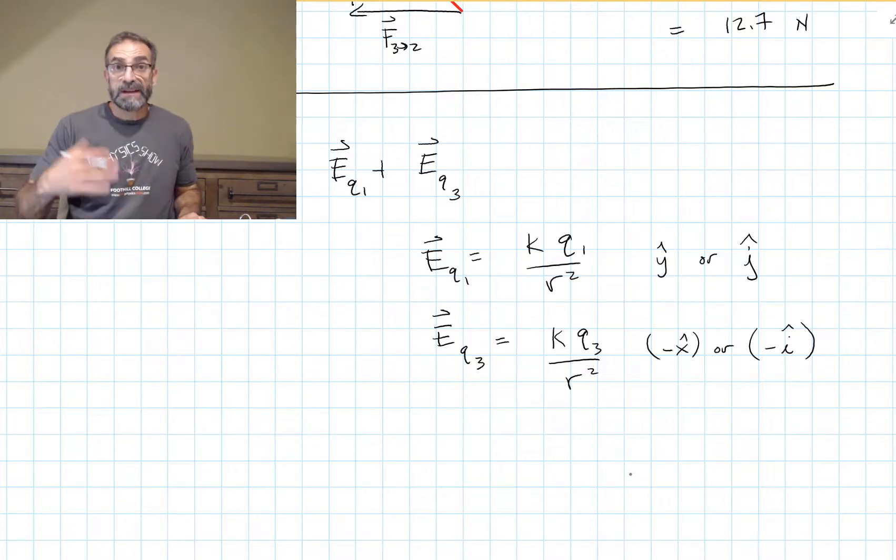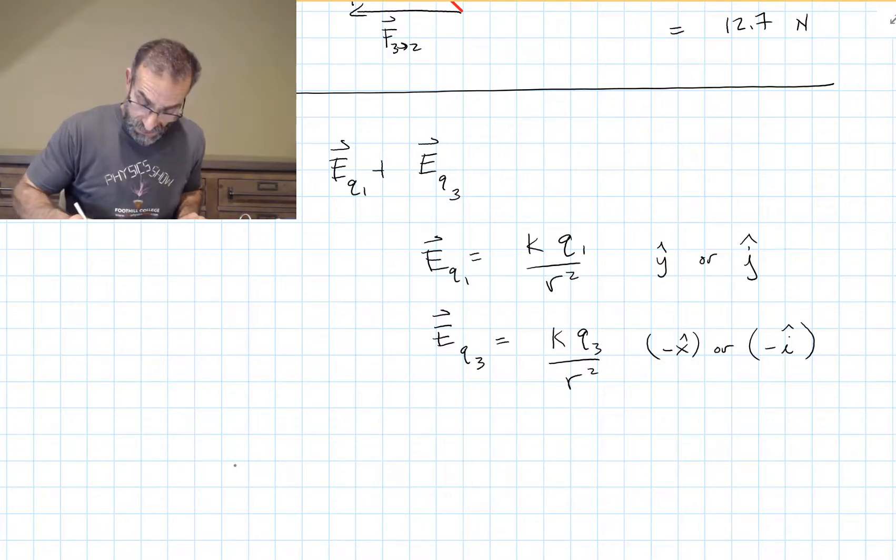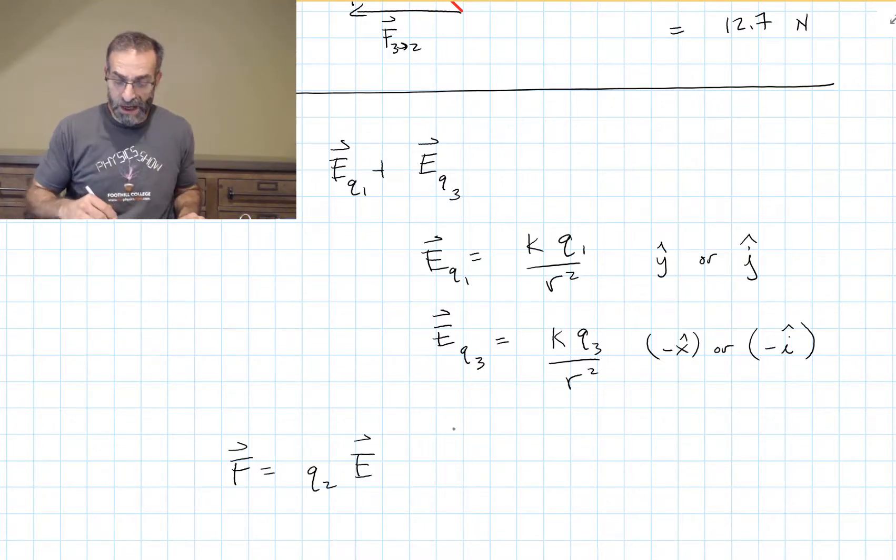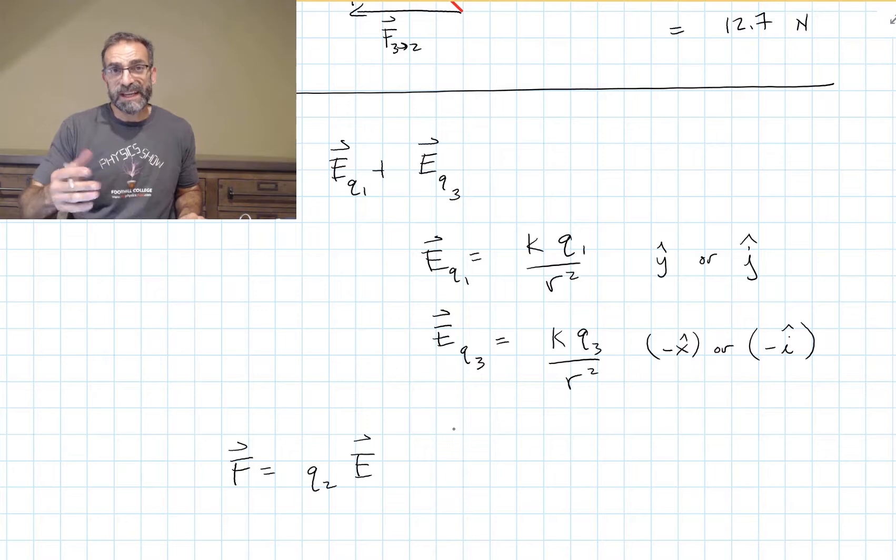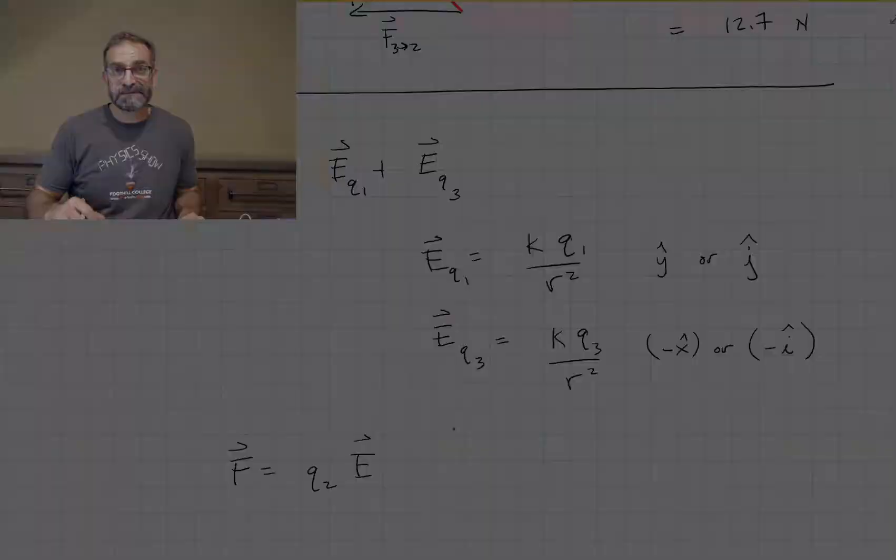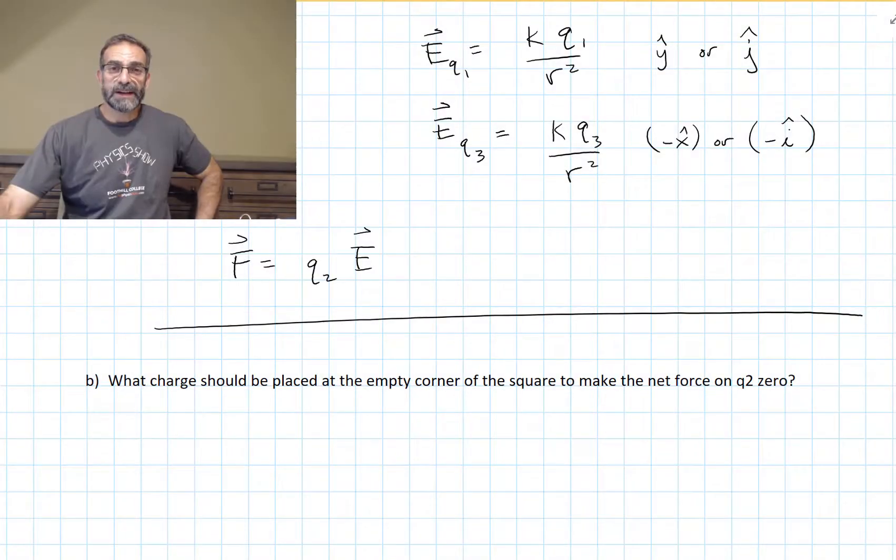And we add these up, and we get the same result. And then we multiply it by Q2 to get the force on Q2. So we could have done that path also. Either way, we get the same answer. Hopefully, you got that okay.